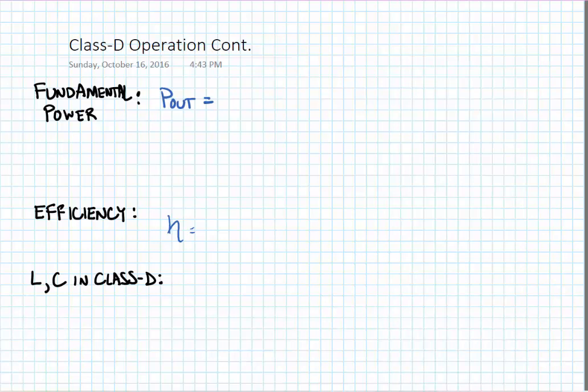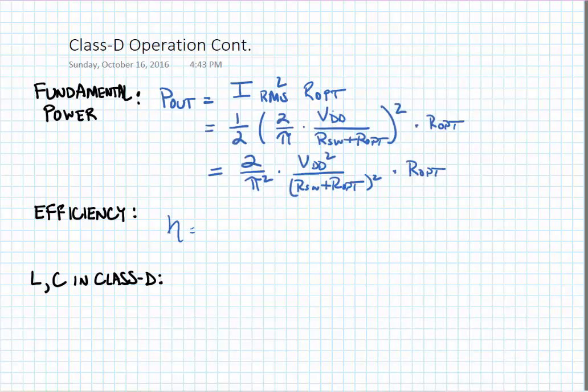P out is given as follows. It's equal to I rms squared times r opt, and we can substitute what we found on the prior analysis. This expression should look fairly familiar. If r switch goes to zero, we have the classic expression for power in a class D amplifier, which would be 2 over pi squared times VDD squared divided by r opt.